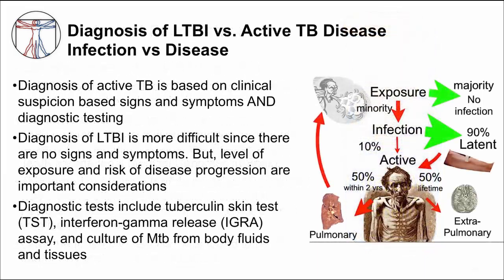Diagnosis of latent TB infection and active TB disease is different. Diagnosis of active TB disease is based on clinical signs and symptoms and diagnostic testing. Diagnosis of latent TB infection is more difficult — there are no clinical signs and symptoms. Diagnosis is then based on considerations of the level of exposure and the risk of progressing to TB disease. Diagnostic tests that are used include the tuberculin skin test (TST), interferon gamma release assay (IGRA), and culture of MTB from body fluids and tissues.